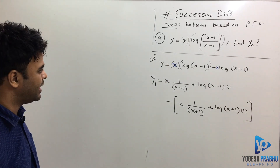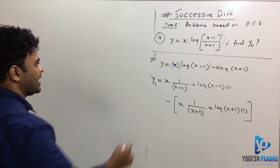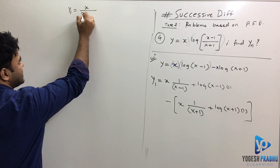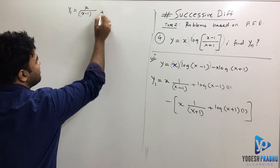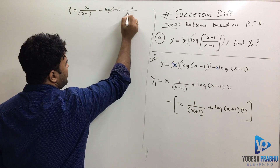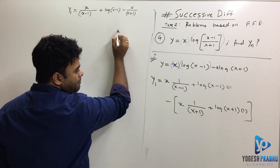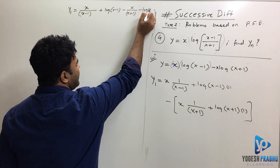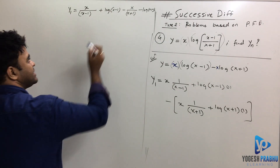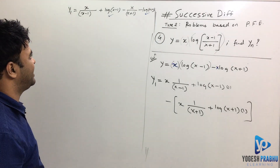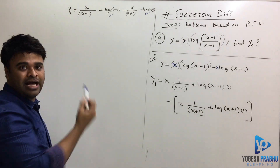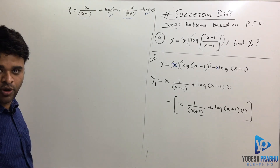So I've got the first derivative. Let me write it out clearly: y₁ = x/(x−1) + log(x−1) − x/(x+1) − log(x+1). Now notice that for the log terms I have a direct standard formula for the nth derivative of log(ax+b), but I don't have a standard formula for the x/(x−1) and x/(x+1) terms, so I need to simplify those further.